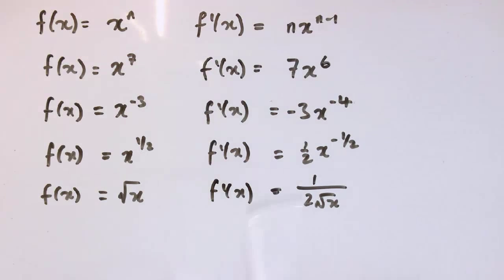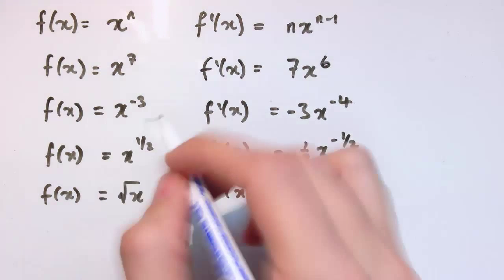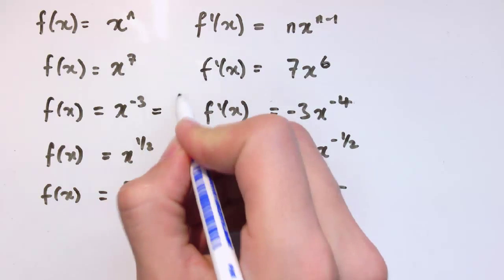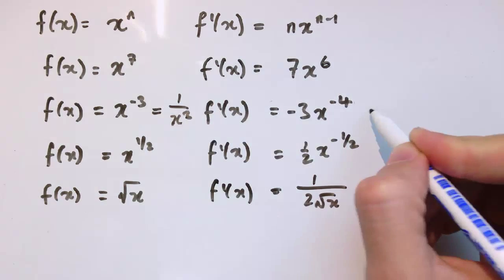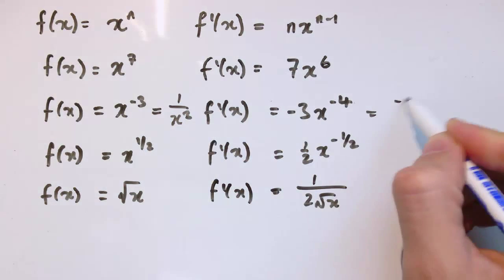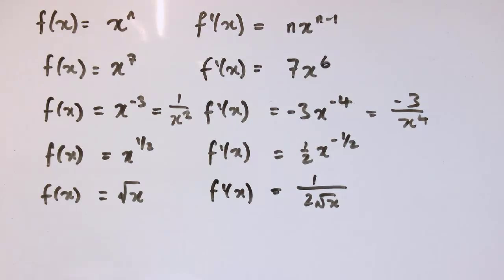So this video isn't about indices, so you can look that up in other places. But similarly, x to the minus 3 is 1 over x cubed, so that differentiates to this, which is minus 3 divided by x to the 4.